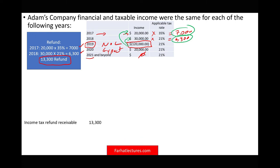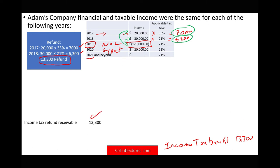We debit income tax refund receivable $13,300, and the credit goes to income tax benefit $13,300. That would be the entry if that's all we have to do. But we have not used all the NOL — we still have $70,000 remaining — and after 2020 we're going to have zero income. So there's more work to do. Note this is not going to be the final credit for income tax benefit.